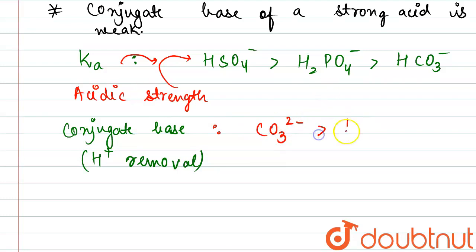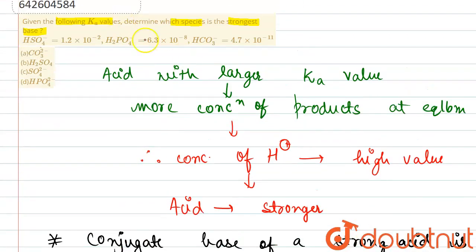Followed by HPO4²⁻, and the least will be SO4²⁻. So carbonate is most basic, and sulfate would be the least basic. The question has asked us for the strongest base, so the strongest base according to the order would be carbonate.